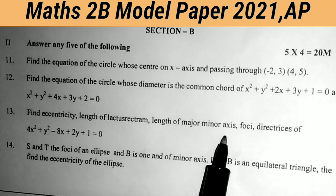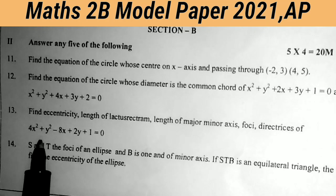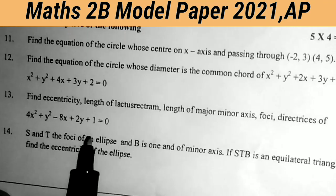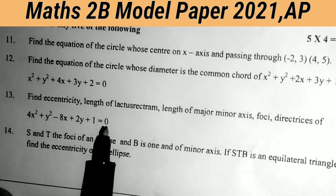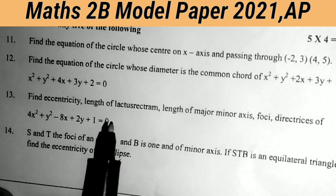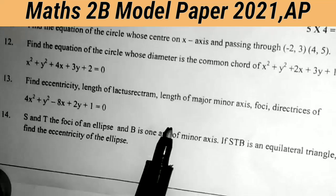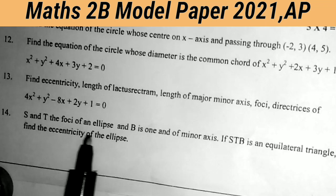The thirteenth question involves finding parameters for the ellipse 4x² − 8x + 2y + 1 = 0. This is the most important 4-mark guaranteed model — this problem comes in the public examination, either from ellipse or hyperbola. Very very very important model. Fourteenth question: S and T are the foci of an ellipse and B is one end of the minor axis. If STB is an equilateral triangle, find the eccentricity of the ellipse.